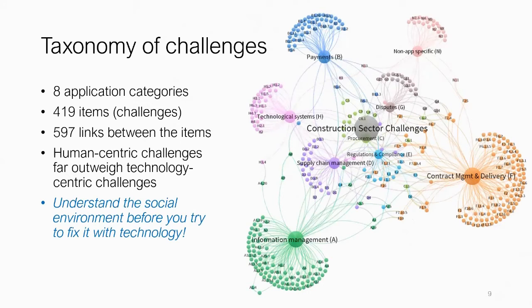Within the research I've been conducting, I've identified a huge amount of challenges, linked but quite separate, across eight different categories. Each one of these small dots you can see is an individual challenge. What's really interesting about this taxonomy is that the majority of them are actually human-centric challenges — they're not technology challenges. That doesn't mean we can't solve some of those challenges with technology, but it reinforces that before you want to try and fix something you have to really focus on what it is you're trying to fix in the first place.